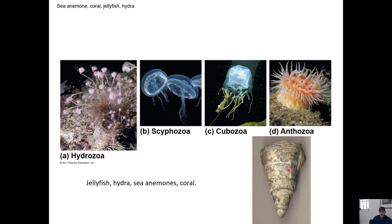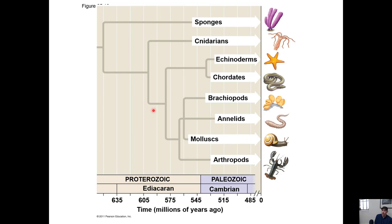Here are some more examples of this group, including fossil groups you can find in Arkansas. A lot of people think these are dinosaur teeth, but they're coral — they're called horn coral. Lots of different, mostly marine organisms are in this group, but some freshwater groups like hydra exist too. We're going to pick up here in the next video and move into some more of the invertebrate groups.